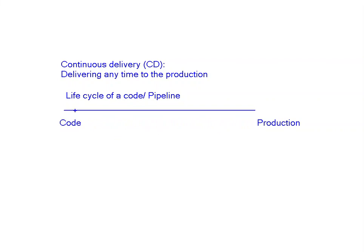Continuous delivery is a pipeline where the code gets tested at different stages. These are the different testing phases which the code will go through, both through manual and automated tests. This could be a manual testing phase or an automated testing phase. Generally, all of the initial phases would be automated, and then at the end there would be a manual testing phase. The code also passes both manual and automated stage gates.